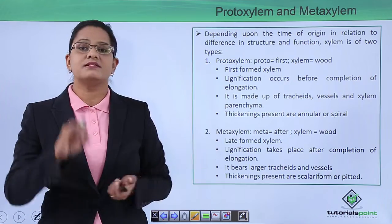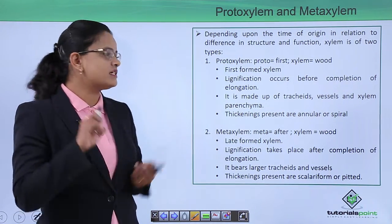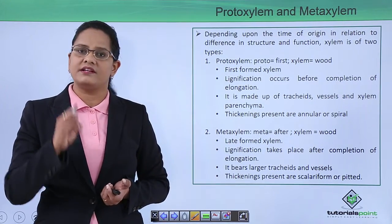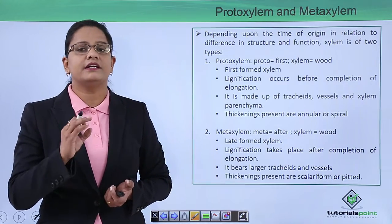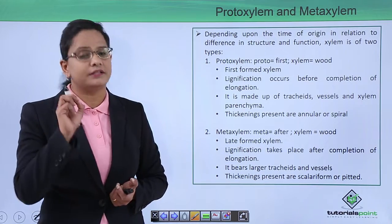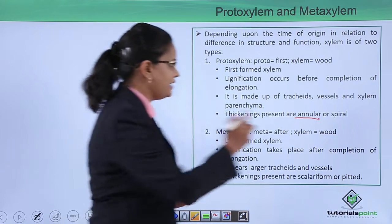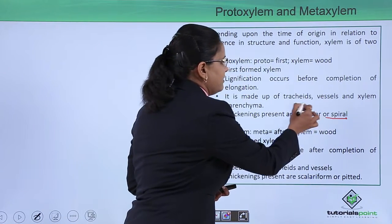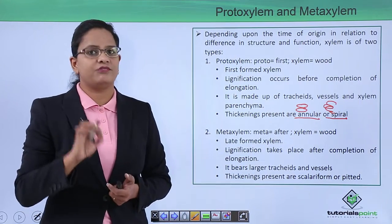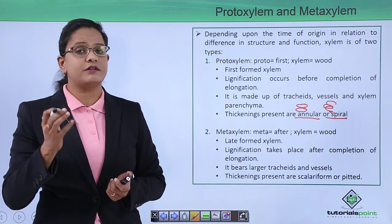The cells present in proto xylem are tracheids, vessels, and generally xylem parenchyma. A primitive type of thickening is present. The thickening can be annular — in the form of rings — or spiral. These two types of thickening are characteristic of proto xylem.